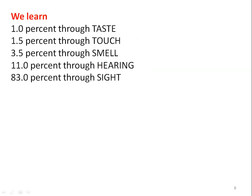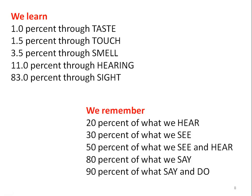Learning happens through the five sense organs. We learn 1% by taste, 1.5% through touch, 3.5% through smell, 11% through hearing, and 83% by sight — by seeing. Hearing and seeing are the dominant organs for the learning process.